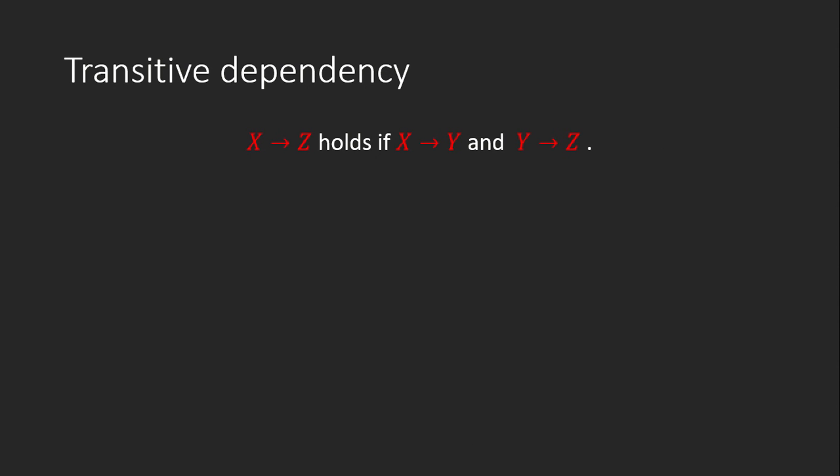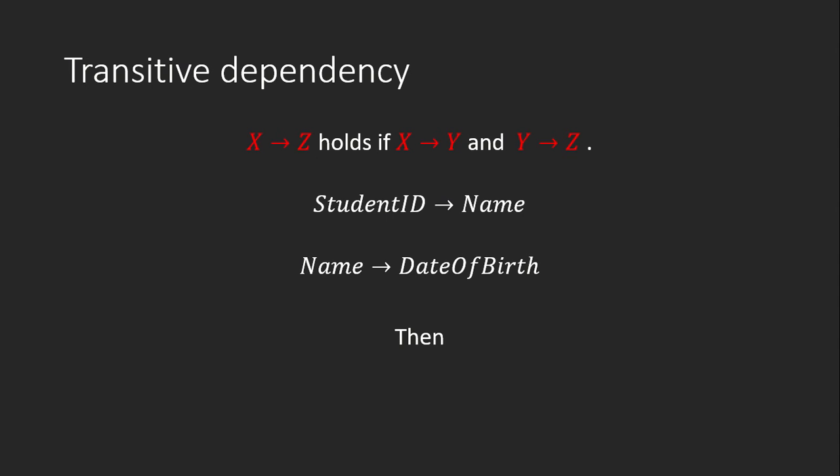Transitive dependency: X → Z holds if X → Y and Y → Z exist. For example, if student ID → name and name → date of birth, then we can infer student ID → date of birth, which is satisfied by the transitivity rule.